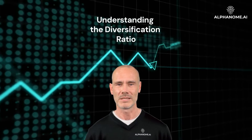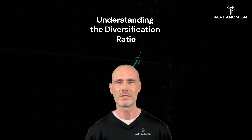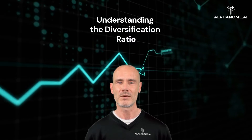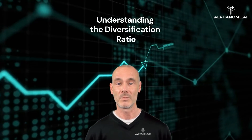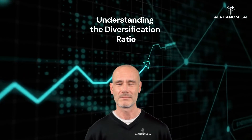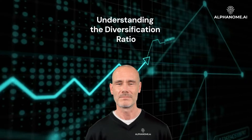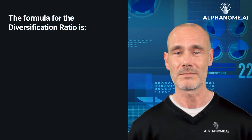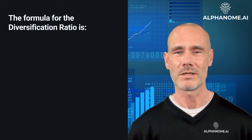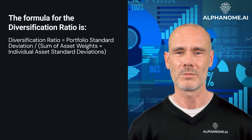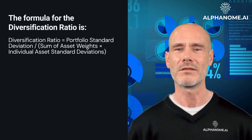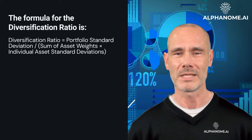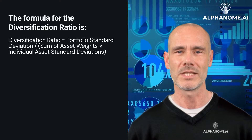It is calculated as the ratio of the portfolio's actual standard deviation to the standard deviation of a perfectly correlated portfolio with the same asset weights. The formula for the diversification ratio is: Diversification Ratio = Portfolio Standard Deviation divided by the sum of asset weights multiplied by individual asset standard deviations.